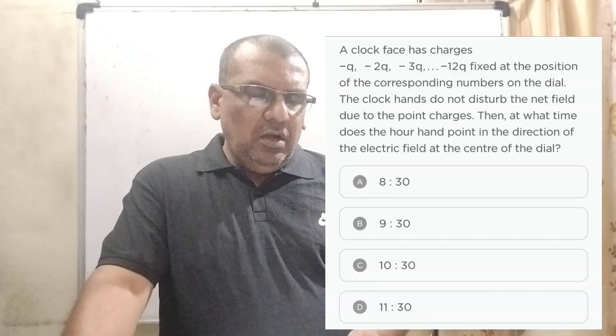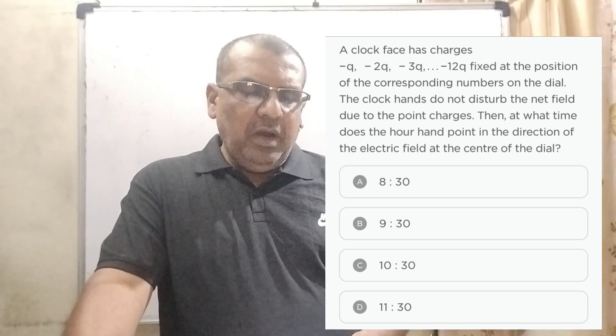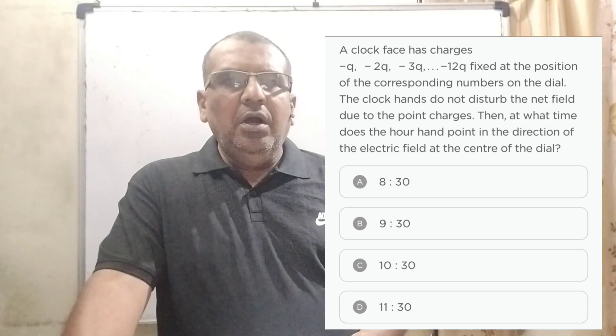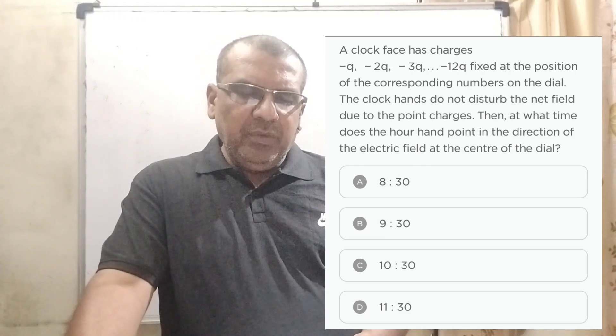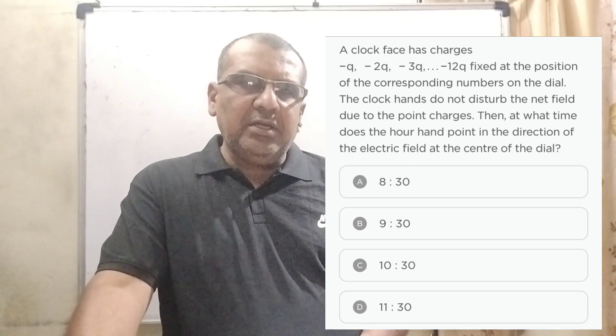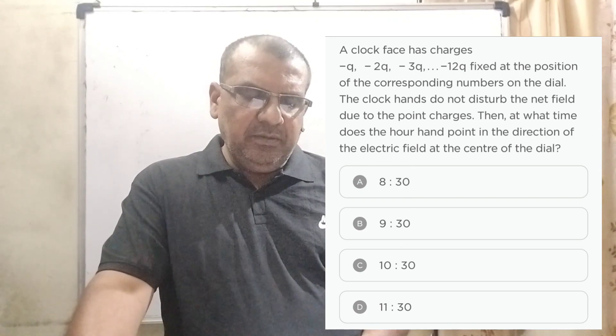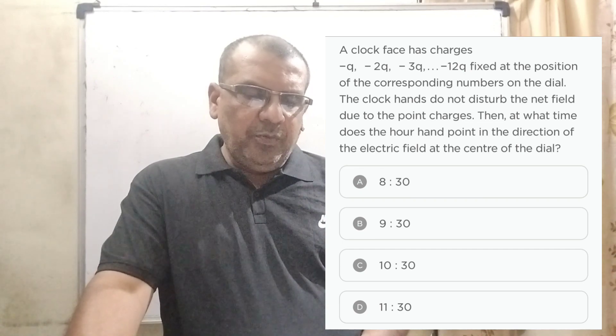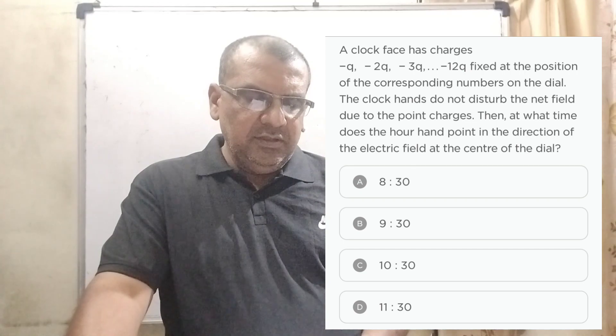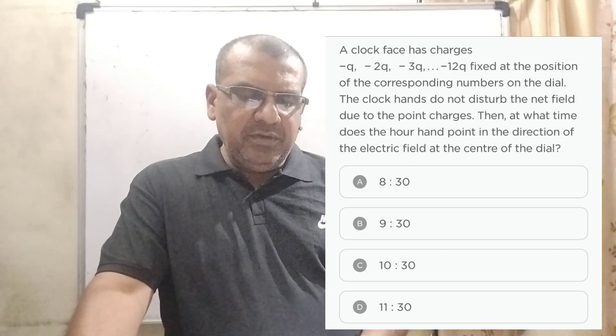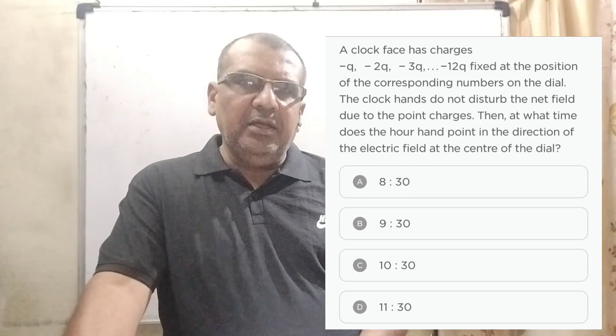Now here is the question. A clock face has negative charges minus Q, minus 2Q, minus 3Q up to minus 12Q fixed at the positions of the corresponding numerals on the dial. Assume that the clock hands do not disturb the net field due to point charges. At what time does the hour hand point to the same direction as electric field at the center of the dial?